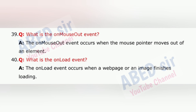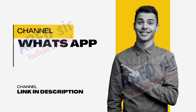Question 40: What is the onload event? The onload event occurs when a web page or an image finishes loading. Unit 5: Extensible Markup Language (XML).